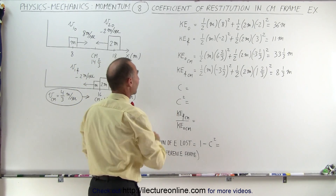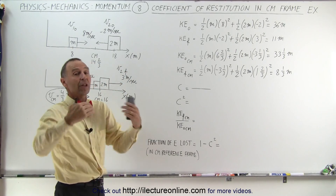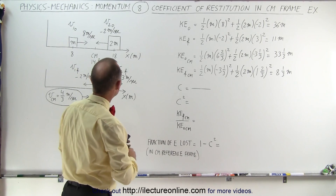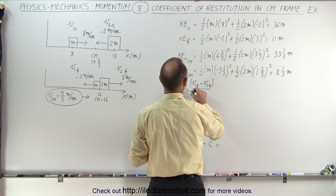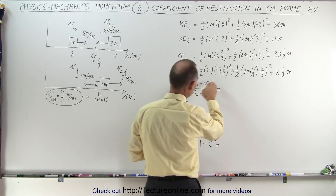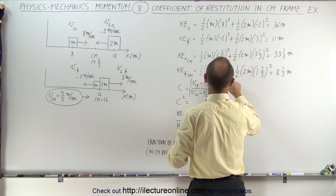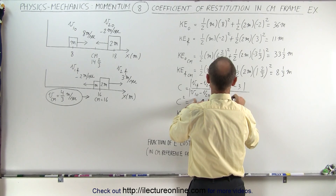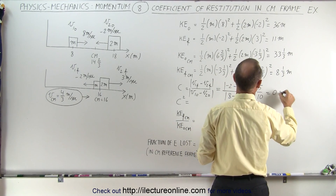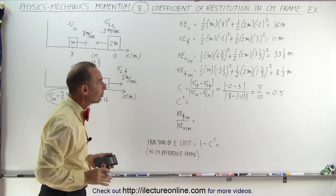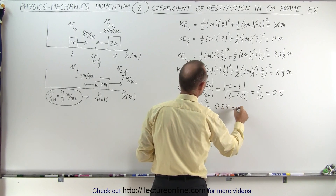Now let's calculate C, the coefficient of restitution. We can use velocities relative to the stationary Earth, which makes it easier. C equals the absolute value of (V1 final minus V2 final) divided by the absolute value of (V1 initial minus V2 initial). That's the absolute value of (minus 2 minus 3) divided by (8 minus minus 2), which equals 5 over 10, equal to 0.5. Squaring that gives 0.5 squared equals 0.25, which is 25%.